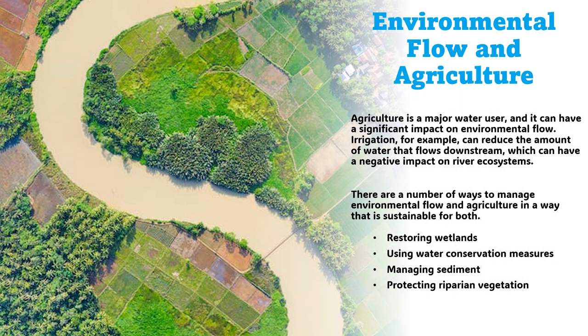Agriculture is a major water user and it can have a significant impact on environmental flow. Irrigation, for example, can reduce the amount of water that flows downstream, which can have a negative impact on river ecosystems. There are a number of ways to manage environmental flow and agriculture in a sustainable way.